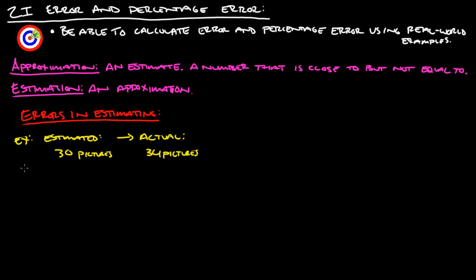The error is just equal to the estimated value minus the true value. So in this case, the estimated value would be 30 minus the actual value of 34, so our error would be negative 4.